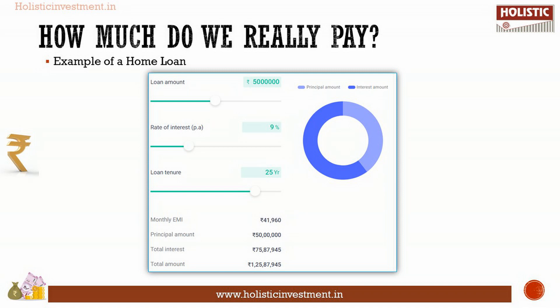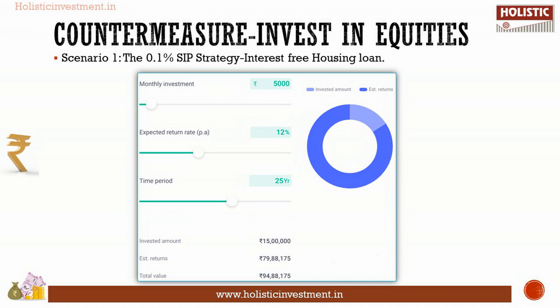So, to nullify the interest, the best way is to buy a home with the full capital. However, this may not be a viable choice for the majority of us. So, how do we get our returns? Let us look at the countermeasure.